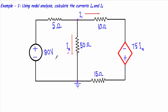This circuit contains two voltage sources: one independent voltage source of 80V, and another dependent voltage source of 75·Ia, where Ia is the current flowing through this 50 ohm resistor.